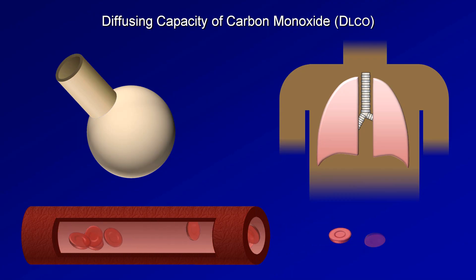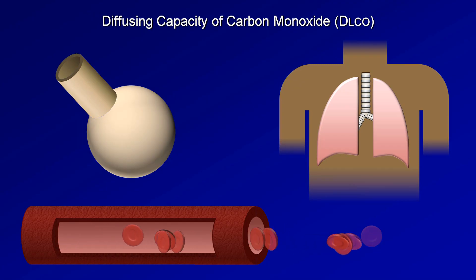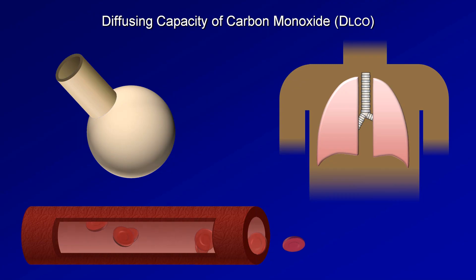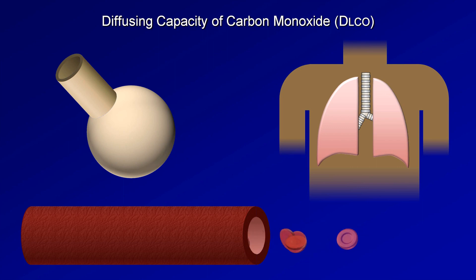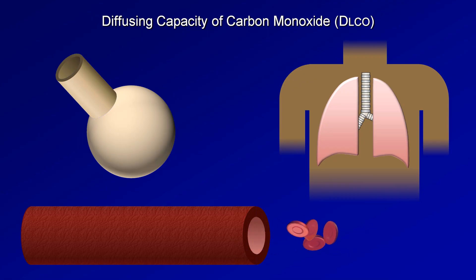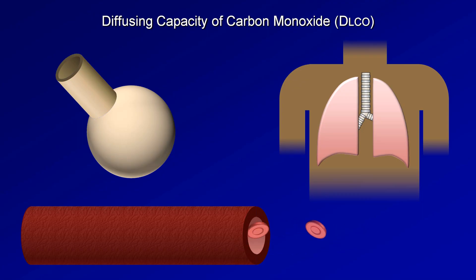The DLCO is a measure of how much volume of carbon monoxide diffuses per minute per unit of pressure across the alveolar capillary membrane. In the US, the units used are usually milliliters of carbon monoxide per minute per millimeter of mercury. The test is then repeated after several minutes, and provided that the two are in rough agreement, the mean will be the value reported, which is usually compared against a predicted value given the age, gender, and height of the patient.